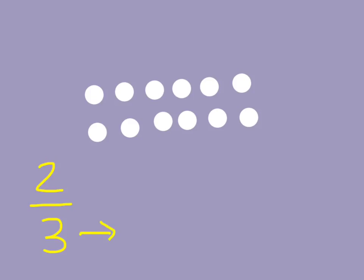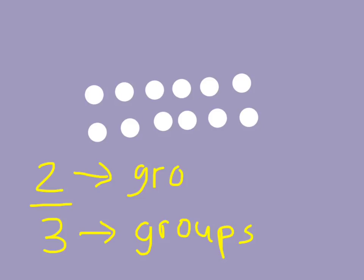Here are the dozen eggs. Two-thirds of the eggs broke. What we need to think about is that the three — the denominator — means that's the number of groups we need to have. And the two means that two of those groups got broken. So the first thing is: can we equally split up these 12 eggs into three equal groups?